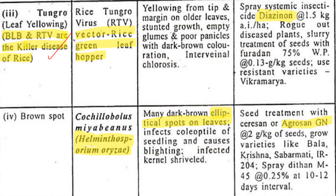Now we will talk about Tungro disease and BLB, which are both called killer diseases of rice. The vector here is the green leafhopper. What happens is there is yellowing from the tip and margins, stunted growth, and interveinal chlorosis. The vector must be controlled using carbofuran or other insecticides to control these diseases.